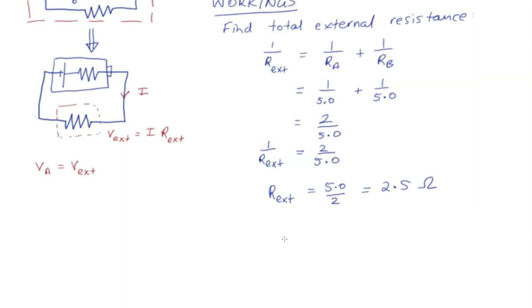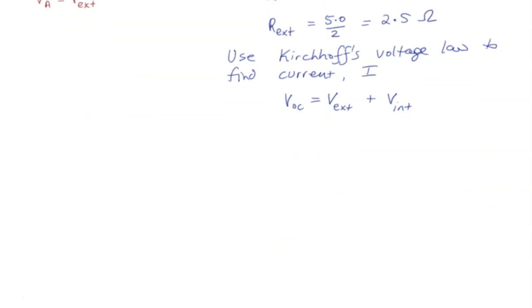Now we can use Kirchhoff's voltage law to find current. So we can expand this out because we know using Ohm's law V equals IR, so we just substitute those in. And now we substitute in our values, and we can rearrange to find the current.